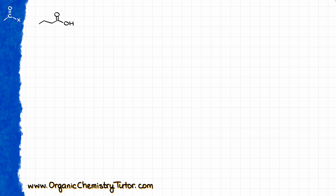We are going to start with a carboxylic acid — in this case I'm using butanoic acid — and react it with propanol, which is an alcohol. We'll need a strong inorganic acid as a catalyst, so here I'm going to use sulfuric acid H2SO4. This reaction is going to produce an ester as a product, and we are also going to have water as our co-product.